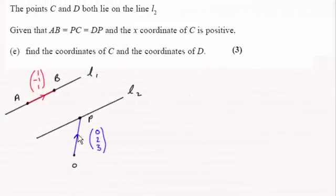Hi there. Now for part E we've got to find the coordinates of C and the coordinates of D where C and D lie on the line L2. And we're told that this distance AB is exactly the same as P to C as it is to D to P. And the x coordinate of C is positive.